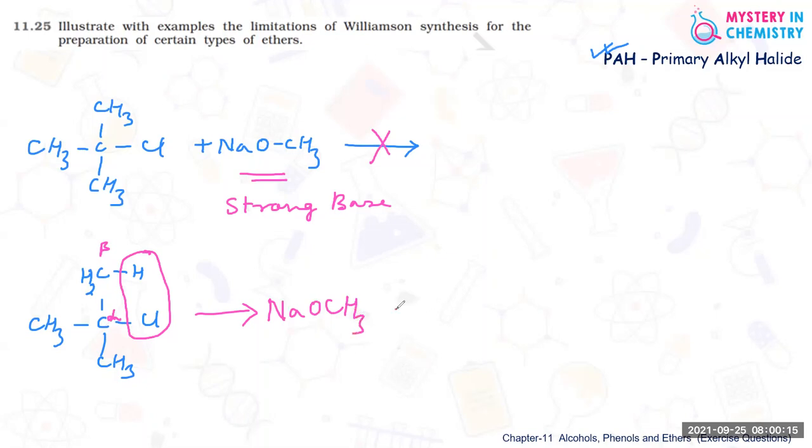And by this, the compound which is formed is totally different. It is alkene, not the ether. So we are getting CH3-C=CH2 with CH3 groups, and double bond formation is taking place. So alkenes are the products formed.